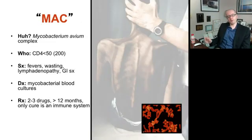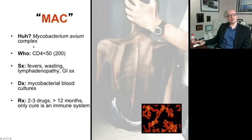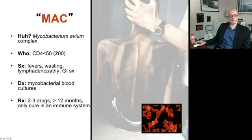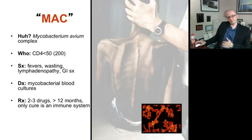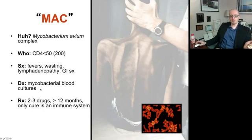MAC — Mycobacterium avium complex — is another archetypal manifestation of AIDS, a dread word in the HIV community. This is a cousin of tuberculosis, involving more than one bug in the group. It only happens in people who are really immunocompromised, almost always below CD4 of 50. They present with fevers, wasting, lymphadenopathy, and sometimes crampy abdominal pain from GI lymphadenopathy — mostly a failure-to-thrive plus febrile presentation. It's hard to diagnose with no characteristic physical exam findings; you get mycobacterial blood cultures, and if positive, treat with two to three drugs. The only real cure is to restore the immune system through treatment.